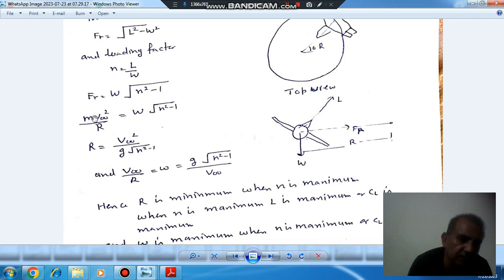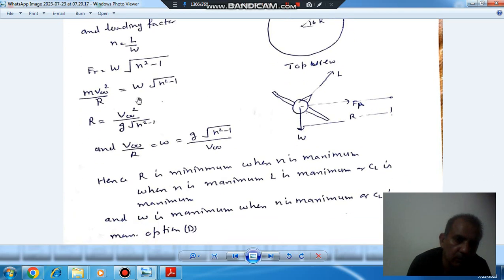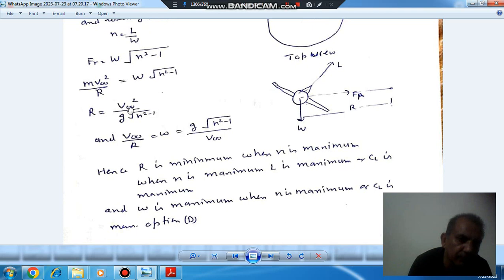Now FR is centrifugal force, which equals M V squared by R, where R is the turn radius. Since M is mass and W is weight, W by M equals g. So R equals V squared divided by g times square root of N squared minus 1. And from R we can find omega.